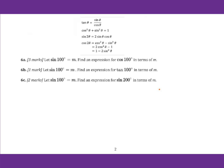Now let's go to 6a. Let sine 100° equals m. Find an expression for cosine 100° in terms of m. For 100 degrees, we go to the second quadrant. So we draw the quadrants: first, second, third, fourth.